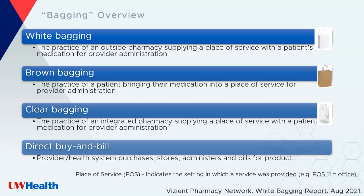Clear bagging is, in my opinion, better than white and brown bagging. This is the practice of an integrated specialty pharmacy within the health system providing the medication for infusion within an affiliated infusion center — for example, UW Health Specialty Pharmacy providing the infusion medication. Direct buy and bill is where providers or health systems purchase, store, administer, and bill for the product. This is something you'll commonly see with physicians who have independent practices.